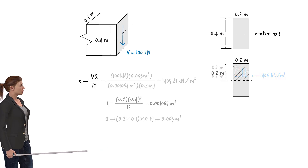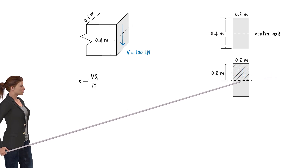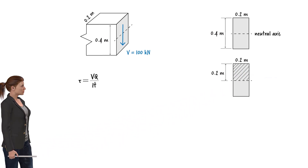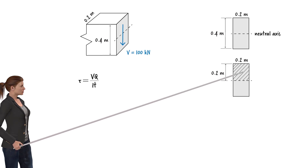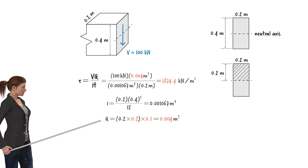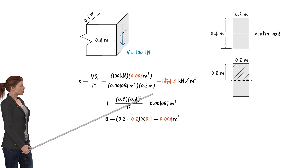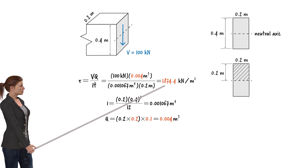Next, let us calculate the shear stress along the neutral axis. The only term that needs to be recalculated is Q, the moment of the shaded area about the neutral axis. Q becomes 0.004 cubic meters, which results in a shear stress of 1,874.4 kN per square meter.